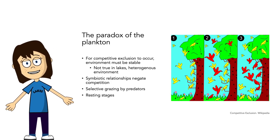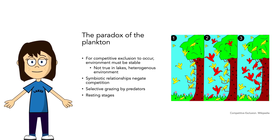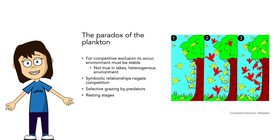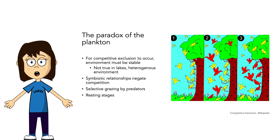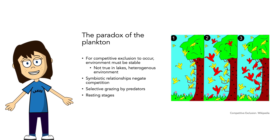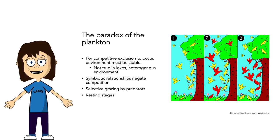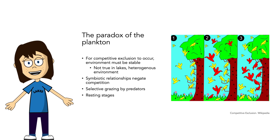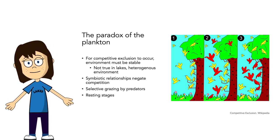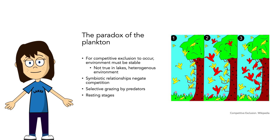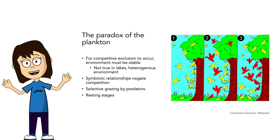There are a few hypotheses that try to address the paradox of the plankton. Often overlooked is that for the competitive exclusion principle to hold true, the environment must be stable — and lakes are far from this. Lakes continually change due to climatic changes and inputs of terrestrial nutrients from storms. Research suggests ecological and environmental factors continually interact so that the planktonic habitat never reaches equilibrium for which a single species is favored. Also, phytoplankton have unique adaptations such as resting stages and symbiotic relationships that negate competition, and there's selective grazing by predators that might keep one species from dominating.